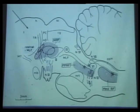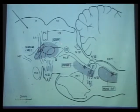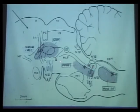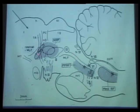Rather than memorizing all the details, think about it very simply: nuclei three, four, and six live in the midbrain and pons; the final common pathway is the nucleus; the two nuclei—six and three—must talk to each other via the medial longitudinal fasciculus; and the nuclei receive supranuclear input from the frontal eye fields and the parieto-occipital-temporal region. The vertical gaze center is in the rostral midbrain at the thalamomesencephalic junction, and the horizontal gaze center is in the pons. Knowing those compartments allows you to clinically figure out whether you're dealing with a supranuclear, internuclear, or nuclear problem.